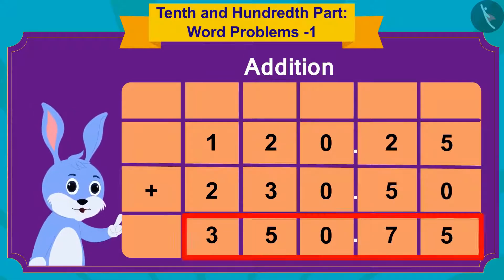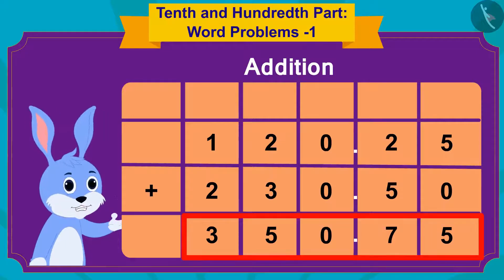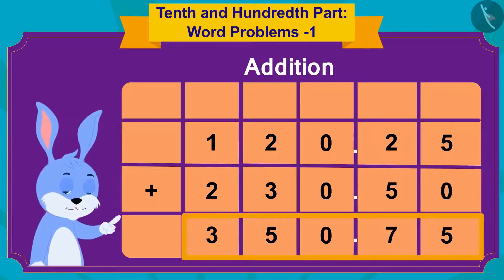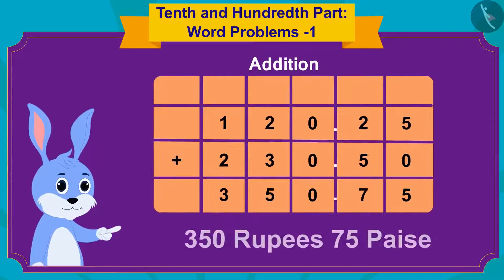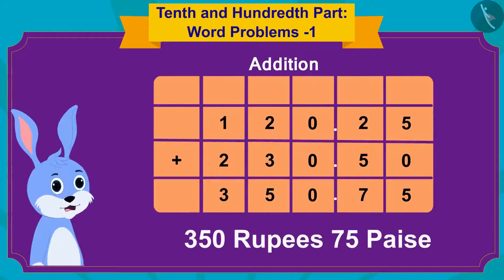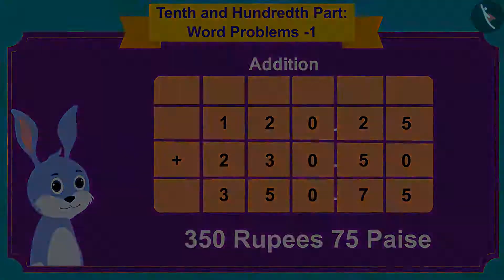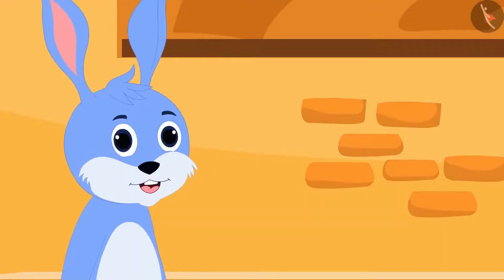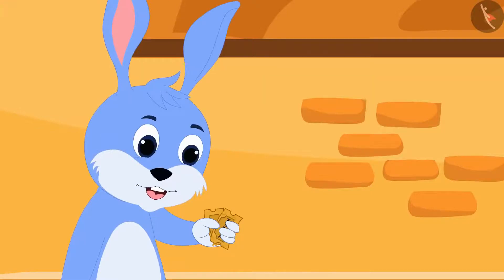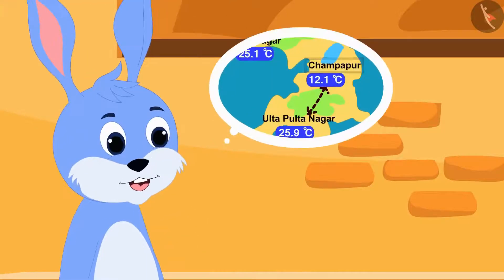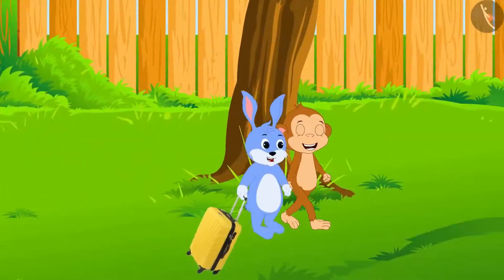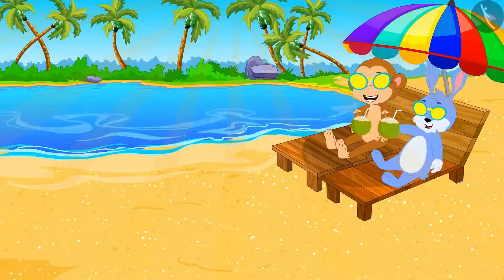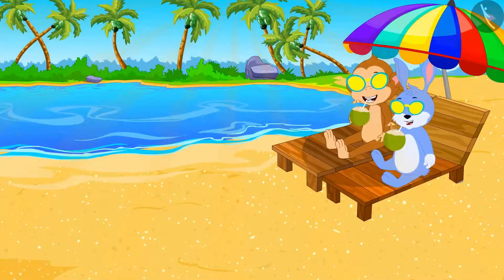I now have a total of 350.75, or 350 rupees 75 paise. Bunny got very excited. He bought two train tickets to go from Champapur to Ulta Pulta Nagar, and together Bunny and Babban reached Ulta Pulta Nagar for holidays.